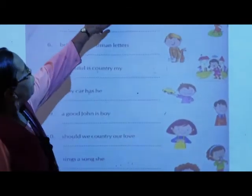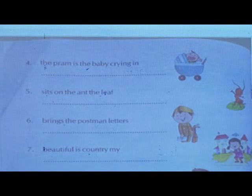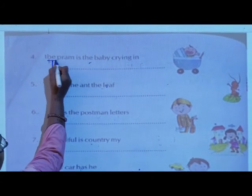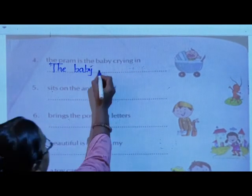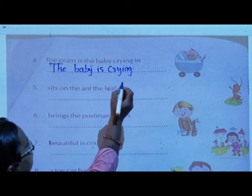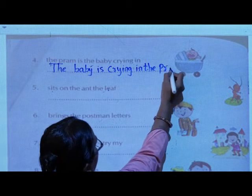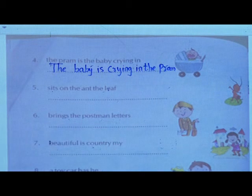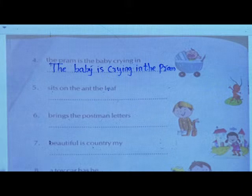Now next: 'The palm in the baby crying in.' Is it correct? No, it is a jumble sentence. The correct systematic sentence is: 'The baby is crying in the farm.' Then: 'Sits on the ant, the leaf.' The correct answer is: 'The ant sits on the leaf.'